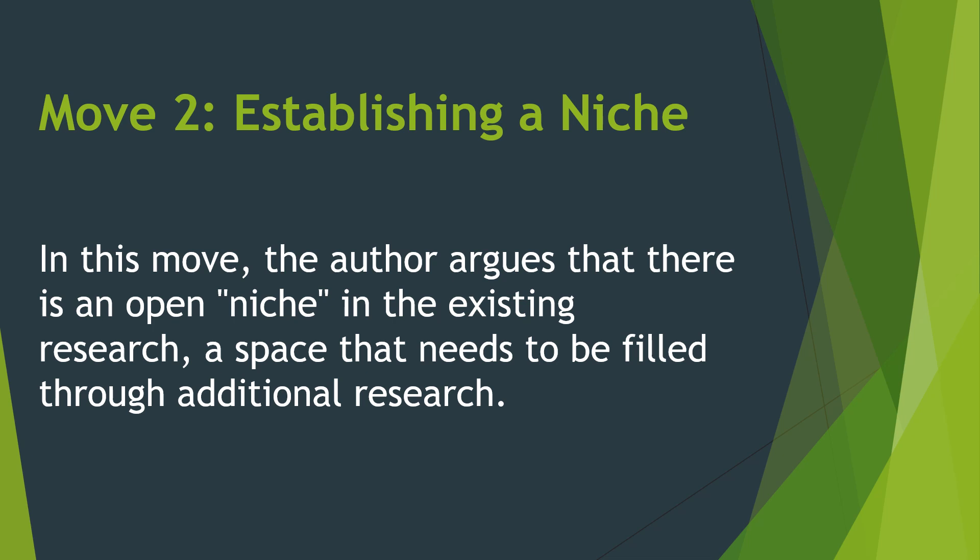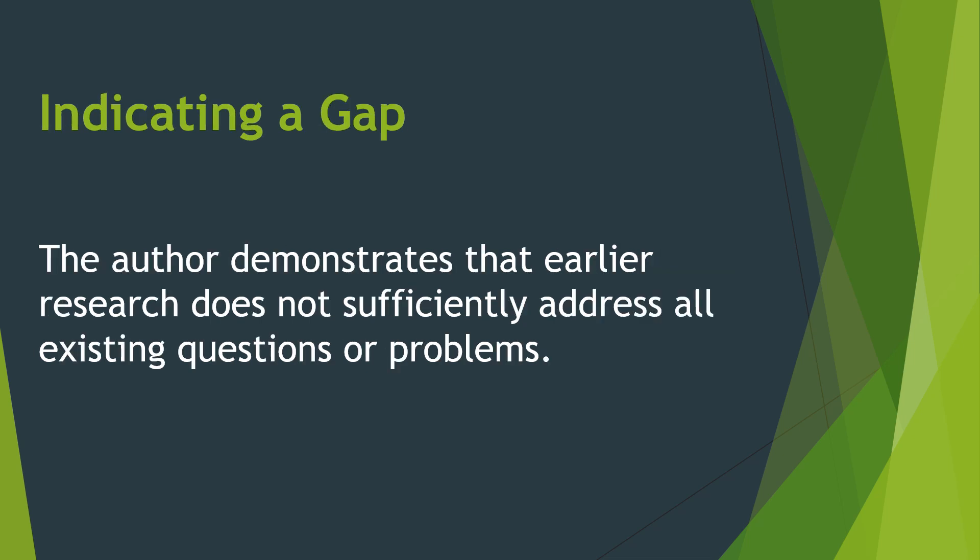Move 2 is Establishing a Niche. After establishing a territory in Move 1, the author argues that there is an open niche in existing research — a space that needs to be filled through additional research. This means you have to argue that there is a problem that needs to be filled in; there's a loophole in the previous studies that wasn't addressed. Hence, your research can be used to provide an answer to that open niche. In the step called 'indicating a gap,' the author demonstrates that earlier research does not sufficiently address all existing questions or problems, and additional research is needed to bridge that gap.